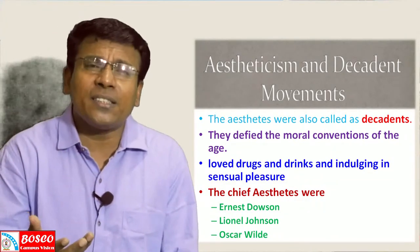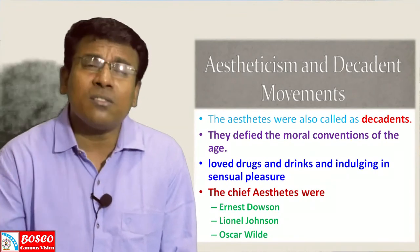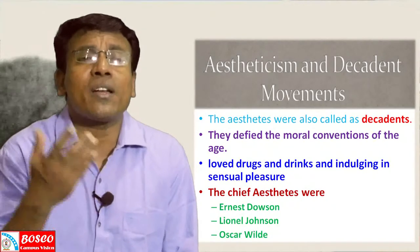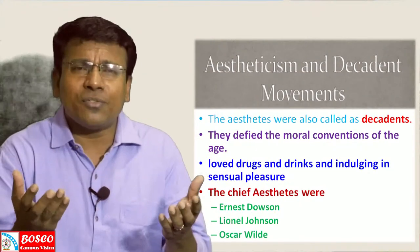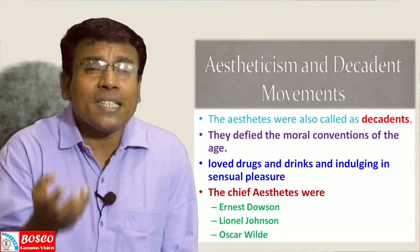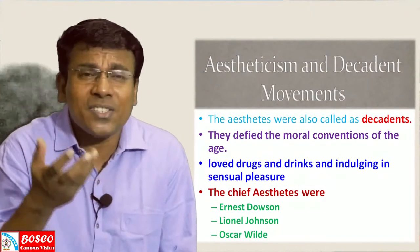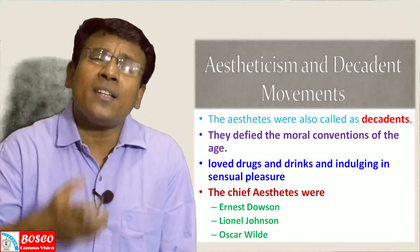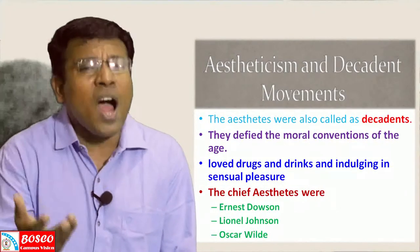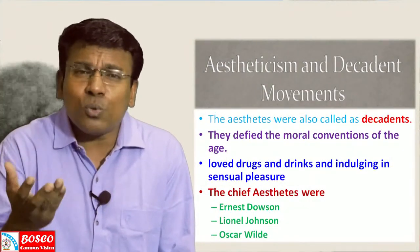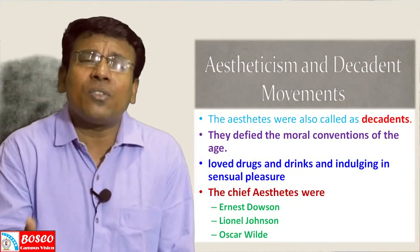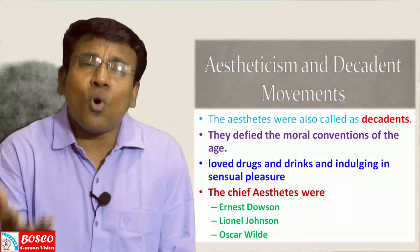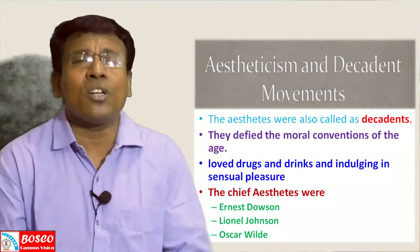The chief Aestheticians were Ernest Dawson, Lionel Johnson, and the most important — Oscar Wilde. In short, Aestheticism or the Aesthetic movement was an intellectual and artistic movement that supported aesthetic values more than socio-political themes for art, music, and literature. Their motto was Art for Art's Sake — art was meant only for enjoyment and sensual pleasure, with no moral or social responsibility.